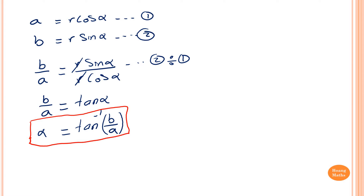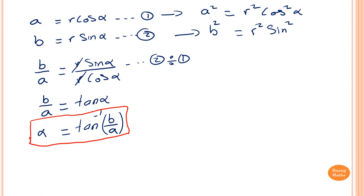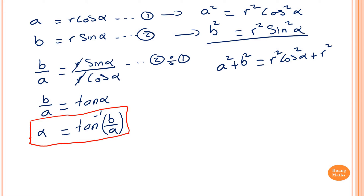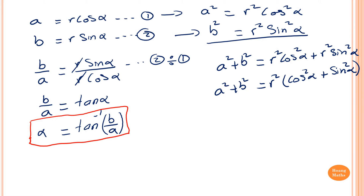Now on equation number one, if I square both sides, that means A² = r²·cos²α. And squaring equation number two, B² = r²·sin²α. Now if I add them up, A² + B² = r²·cos²α + r²·sin²α. So A² + B² = r²; I take the common factor out, leaving cos²α + sin²α. Please note that cos²α + sin²α = 1. This means A² + B² = r².